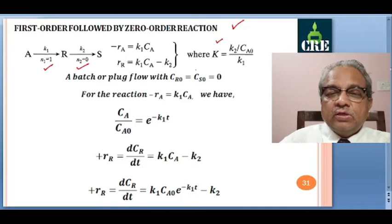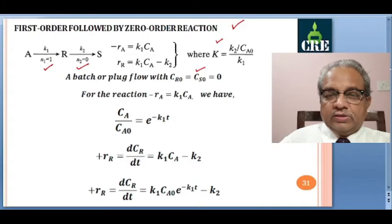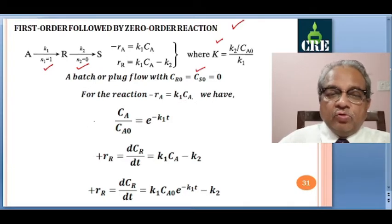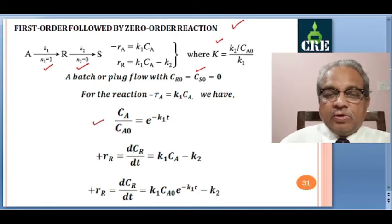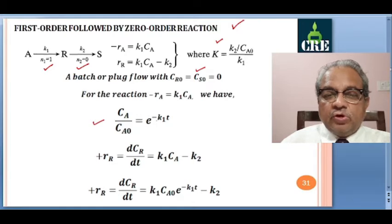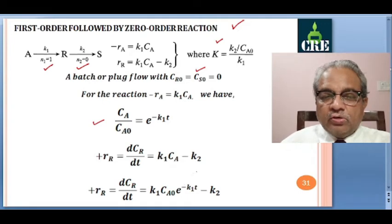For the first reaction, −rA = K1·CA. We know this result: CA/CA0 = e^(−K1·t). For the rate of formation of R: dCR/dt = K1·CA − K2 = K1·CA0·e^(−K1·t) − K2. This derivation is similar to what we have done before, but now the orders are 1 and 0 instead of 1 and 1.